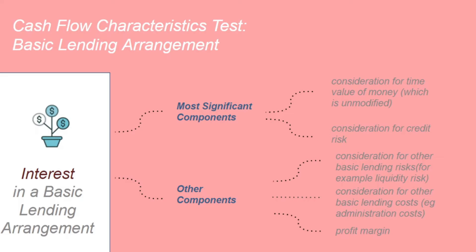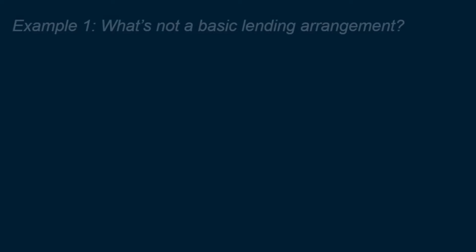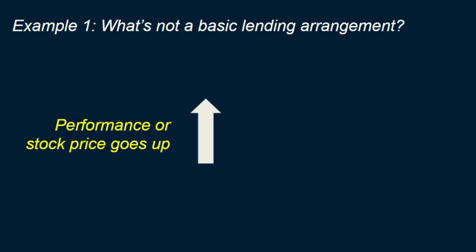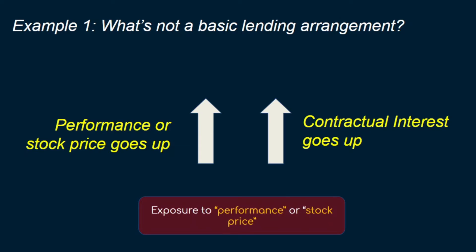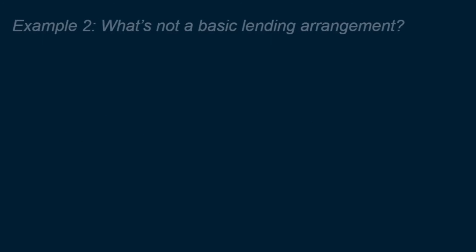For example, if a contract stipulates that the interest rate will increase with the stock price of an entity, this gives the contractual cash flows exposure to stock price fluctuations. Exposure to stock price is not a credit risk and not a basic lending risk, and therefore such a contract is not consistent with a basic lending arrangement.